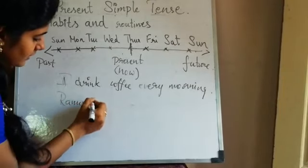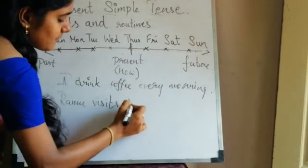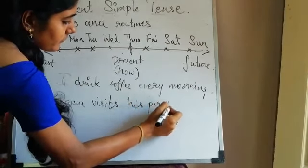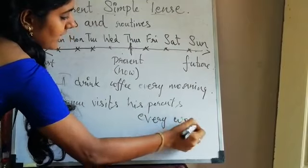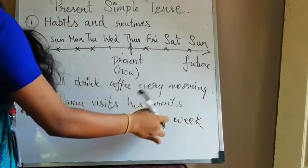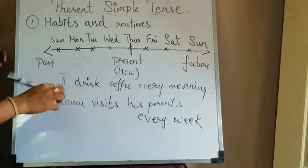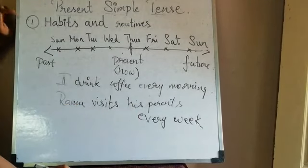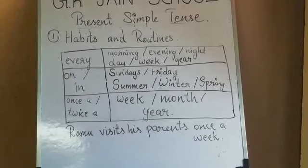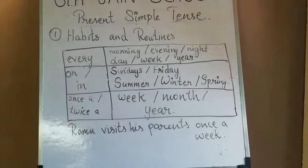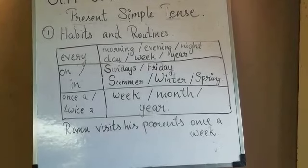Next example: 'Ramu visits his parents every day.' Here, Ramu is the subject, visits is the verb, and 'his parents every day' completes the sentence. This is simple present tense. So first, we saw habits and routines — these words express that the action takes place as a habit or routine.